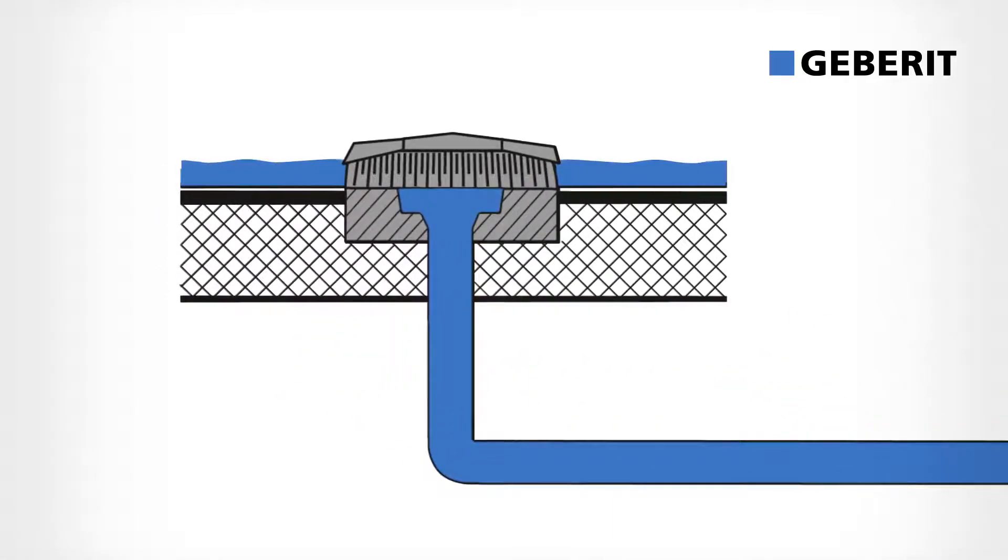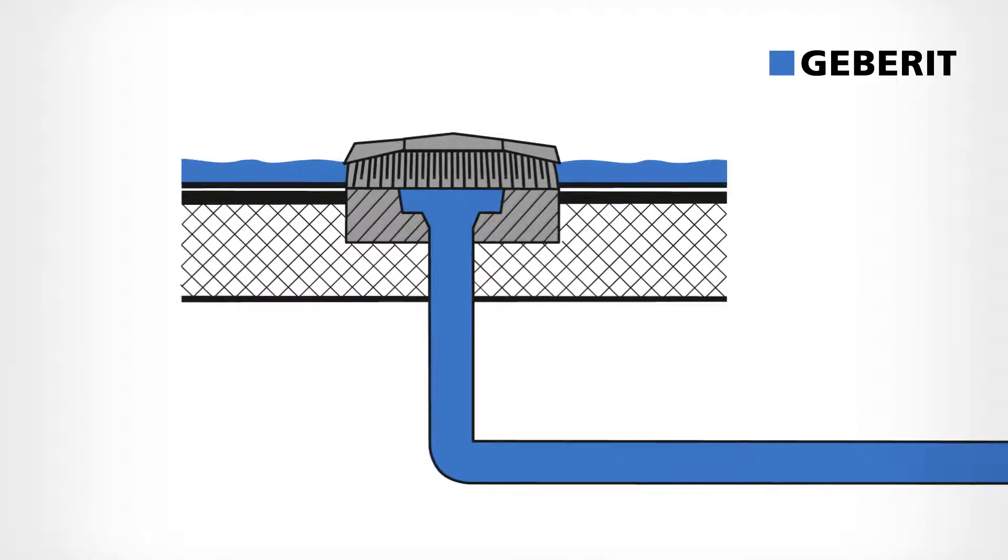Geberit Pluvia roof outlets make sure that all the rainwater drains off without interruption of the suction effect. And that's not all. The high flow velocity ensures that the system is self-cleaning. This cuts down on cleaning and maintenance costs.